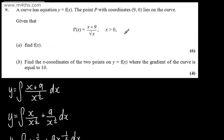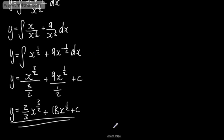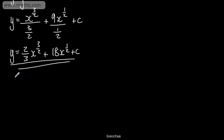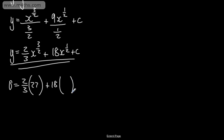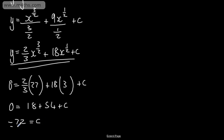We have point P with coordinates 9, 0, so we can substitute this in to solve for c. So 0 equals 2 thirds of 9 to the power of 3 over 2. Taking the square root gives us 3, cubing gives us 27. Plus 18 lots of 9 to the power of 1 half — that's the square root, giving us 3. So that's 18: 2 thirds of 27 is 18, plus 54, plus c equals 0. So negative 72 equals c.